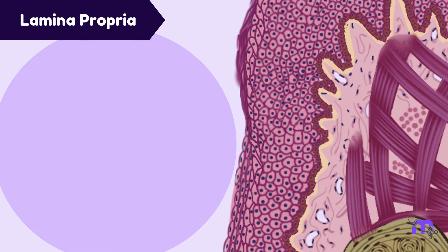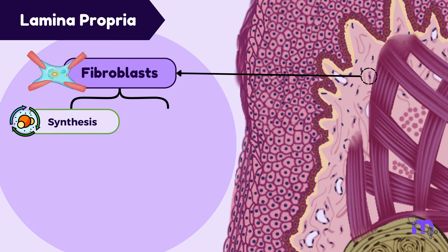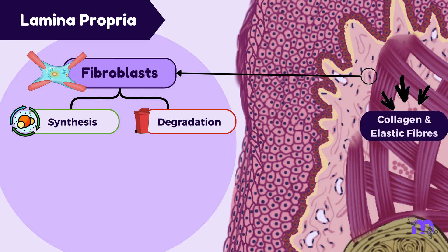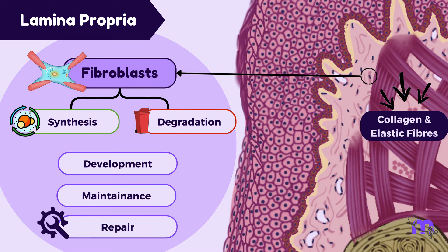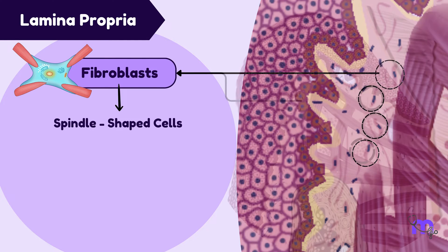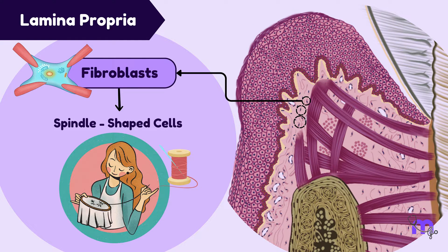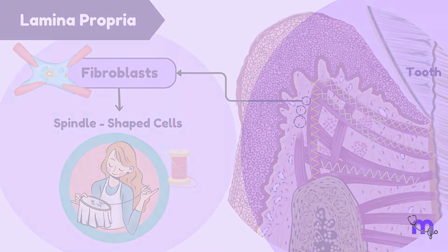There are cells like fibroblasts, which have a role in both the synthesis as well as degradation of the collagen and elastic fibres, thus playing a role in the development, maintenance, and repair of the gingival connective tissue. These spindle-shaped cells act like a master tailor, meticulously weaving and aligning collagen fibres, ensuring gums have the perfect fit against our teeth.